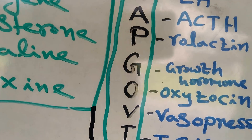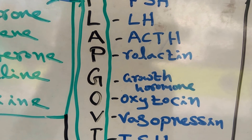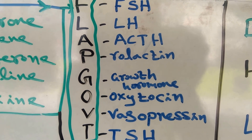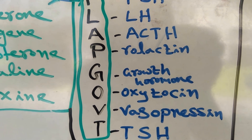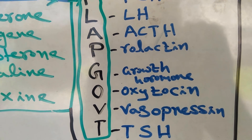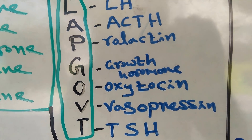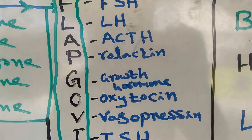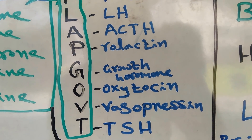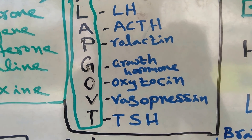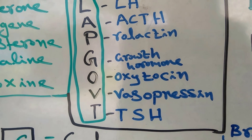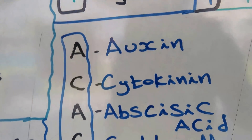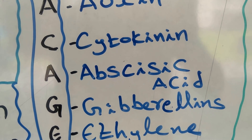For pituitary gland hormones, the code is 'PLAP Government' — F for FSH (Follicle Stimulating Hormone), L for LH (Luteinizing Hormone), A for ACTH, P for prolactin, G for growth hormone or somatotrophic hormone, O for oxytocin, V for vasopressin, and TSH for thyroid stimulating hormone.